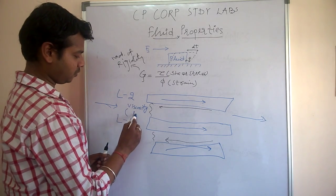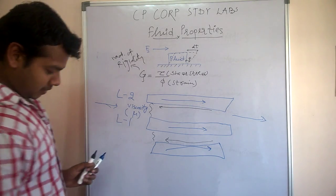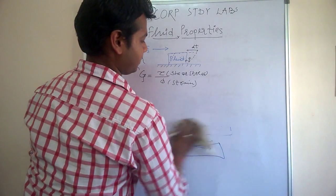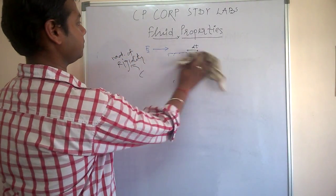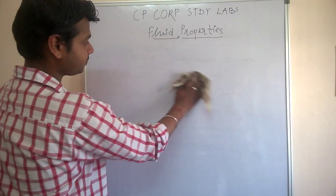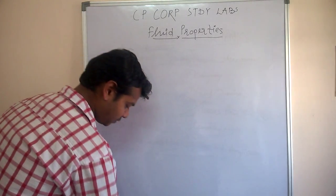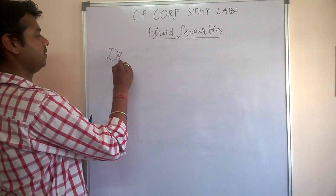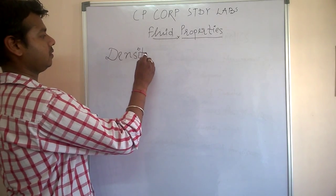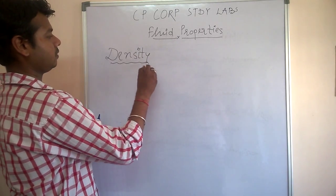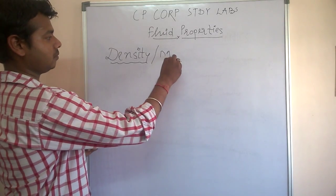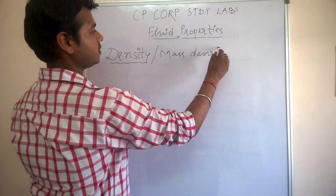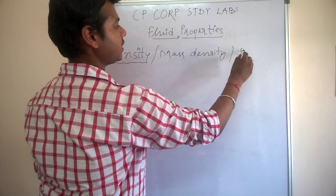Viscosity is denoted by mu. The next very important property is density, also known as mass density or specific mass.